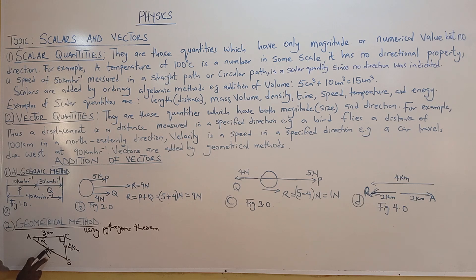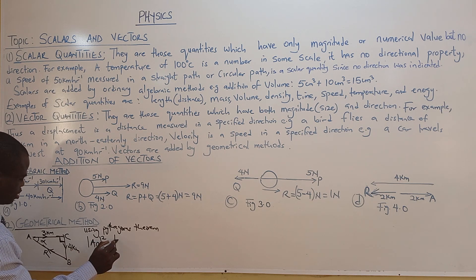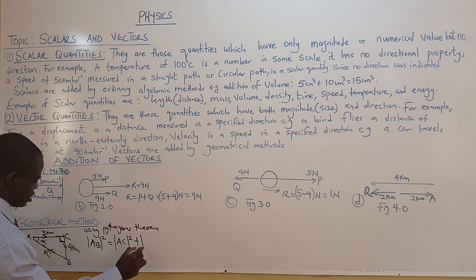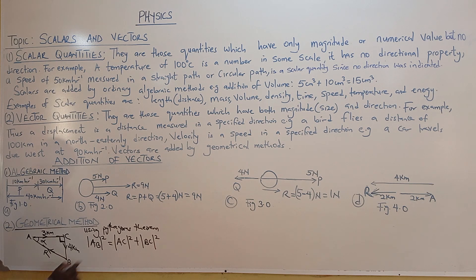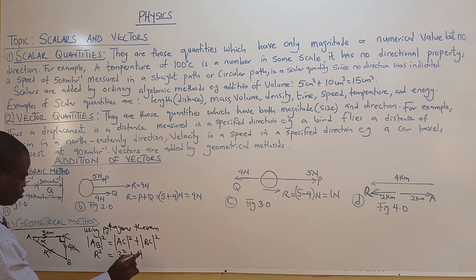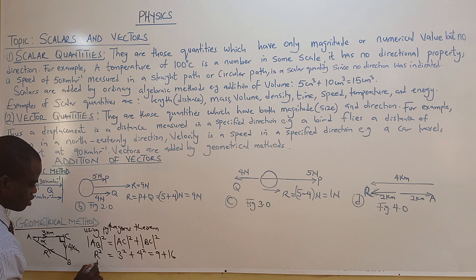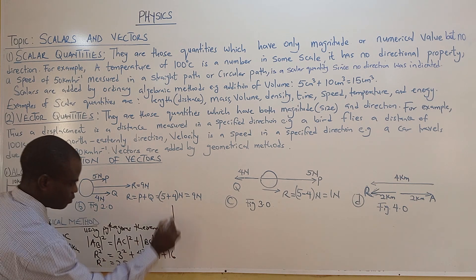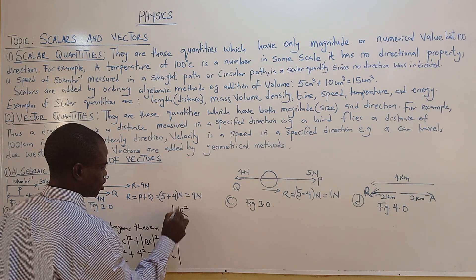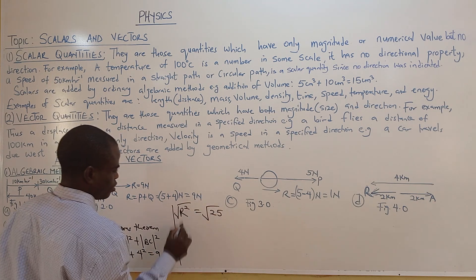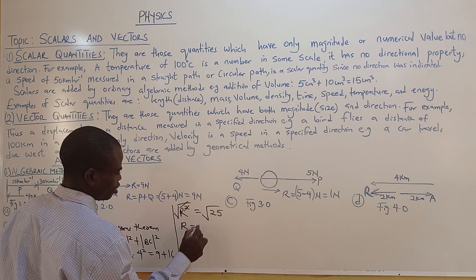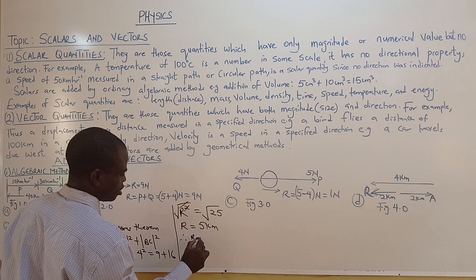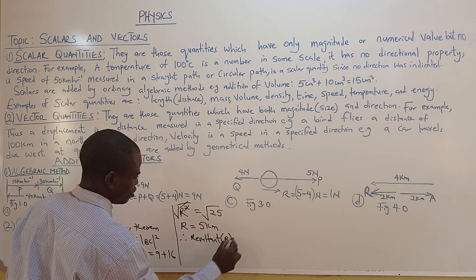To find the resultant, line AB is the longest line: AB squared equals AC squared plus BC squared. So R squared equals 3 squared plus 4 squared, which is 9 plus 16. R squared equals 25. Finding the square root of both sides, R equals 5 km. Therefore, the resultant R equals 5 km.